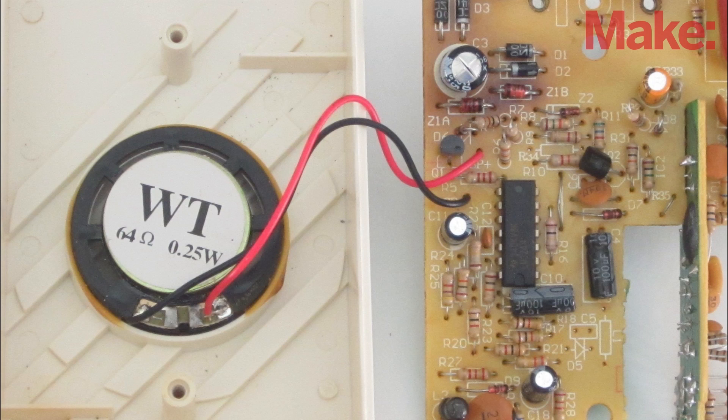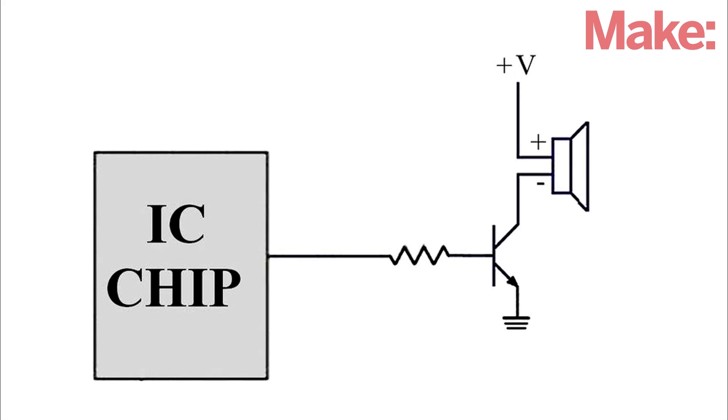Now, find the place where the speaker connects to the circuit board. The positive terminal of the speaker will typically be connected to the positive supply voltage, and the negative terminal will be connected to a transistor which connects to ground.